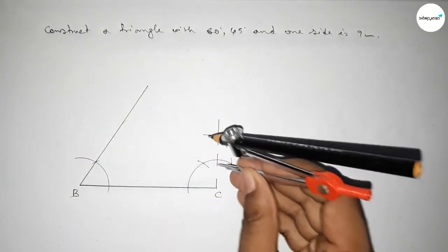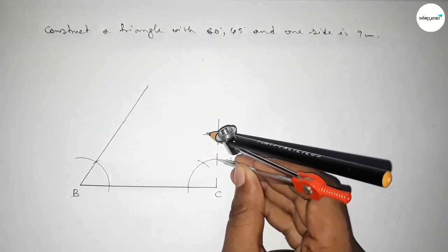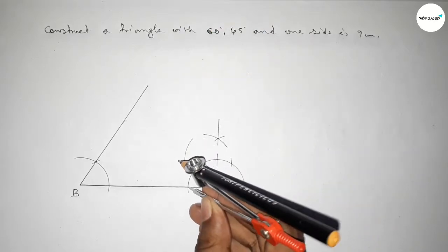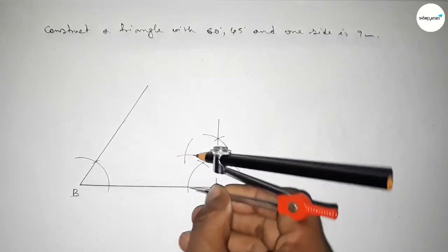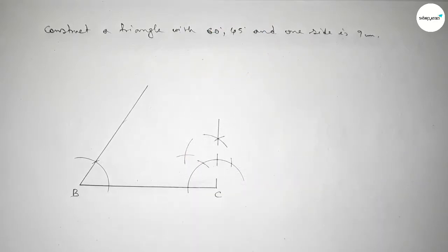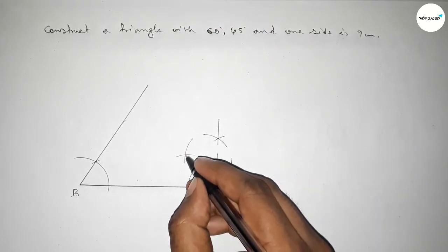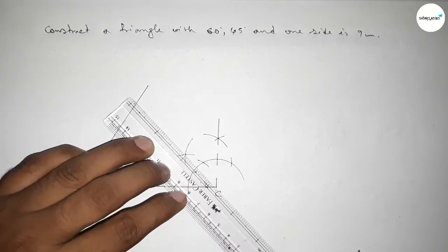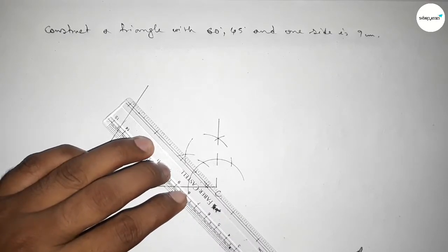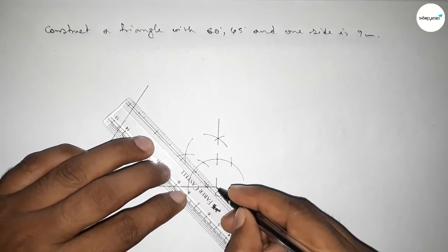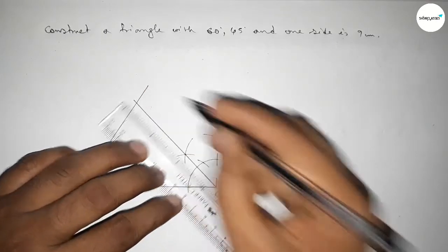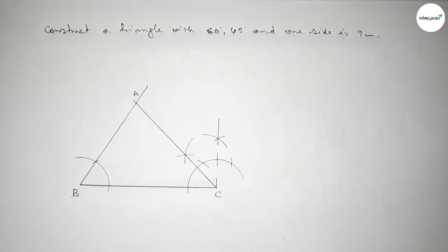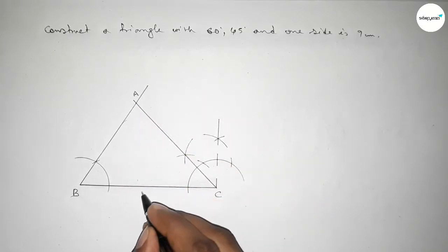Next, bisecting this angle — putting the compass here and taking any length, cutting here, so both the curves intersect at a point. Now joining this to get a 45 degree angle, and both the lines intersect at point A.